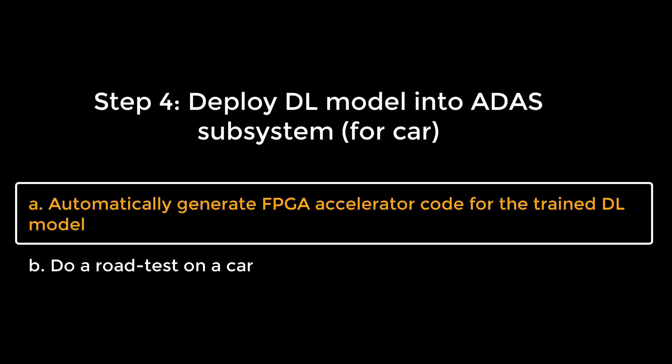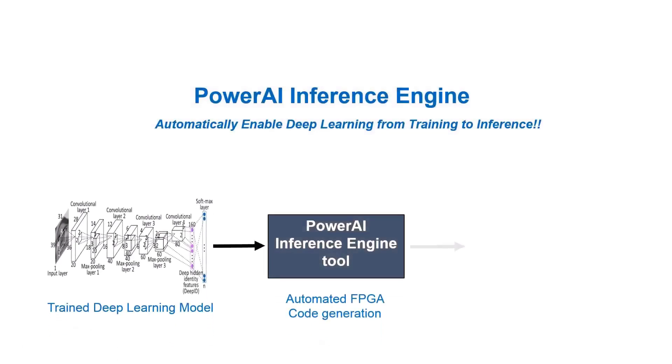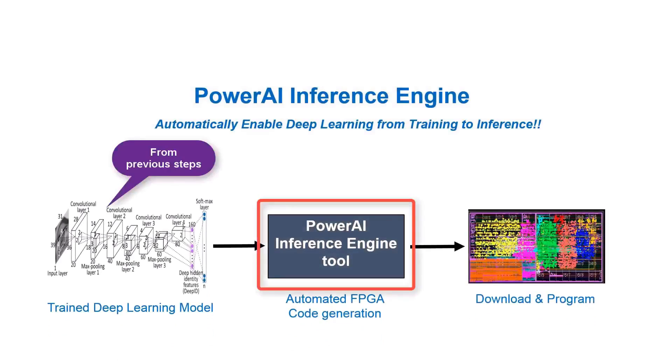In the last step, the developer deploys the deep learning model into the embedded system in a car. First, we demonstrate how to automatically generate an FPGA accelerator for a deep learning model without any coding. Because of low power, low cost, programmable, and real-time capability, many industry products use FPGA in edge devices for real-time control and signal analysis. However, programming FPGA is very difficult for data scientists. IBM Research developed a unique technology to automatically generate FPGA code for a given deep learning model — called Power AI Inference Engine Tool — so developers can implement deep learning inference in FPGA without any coding.